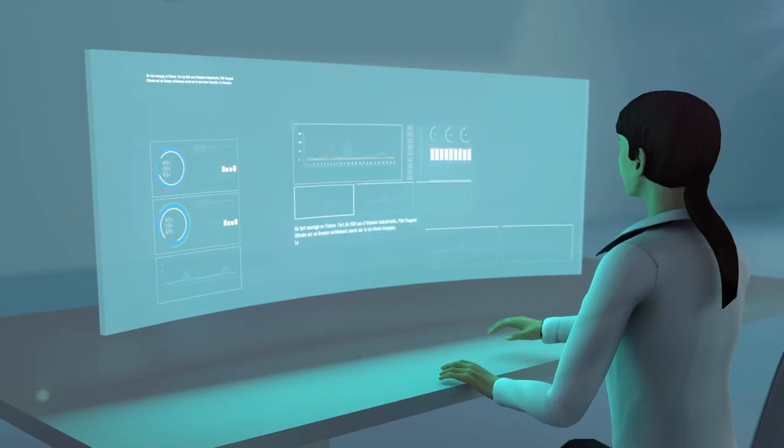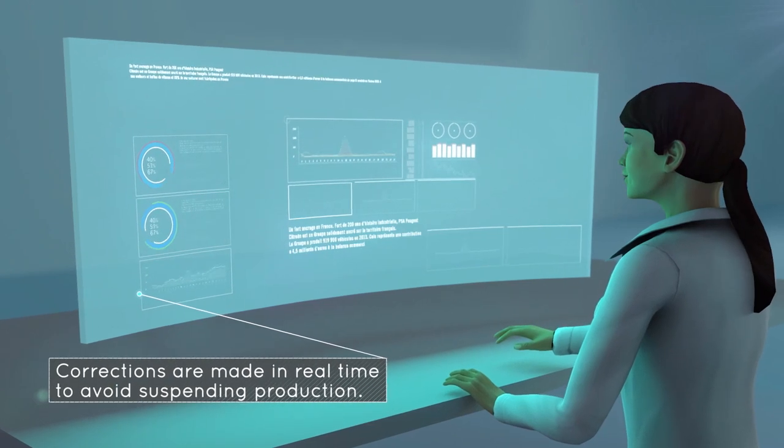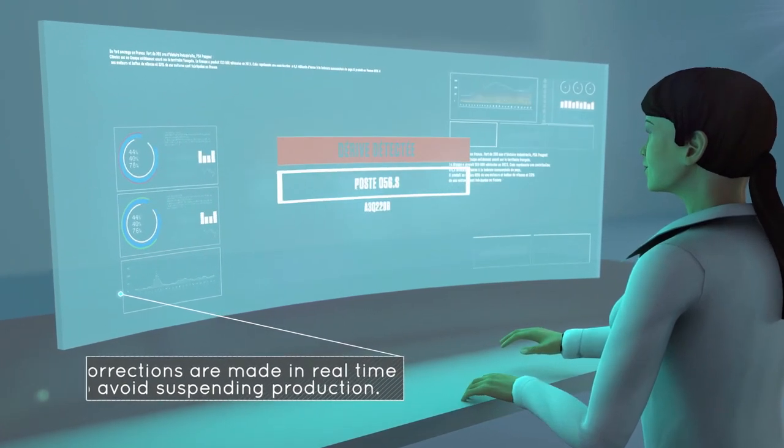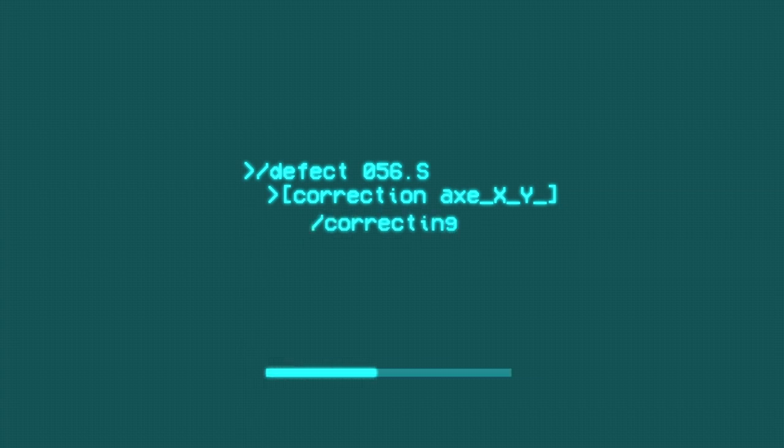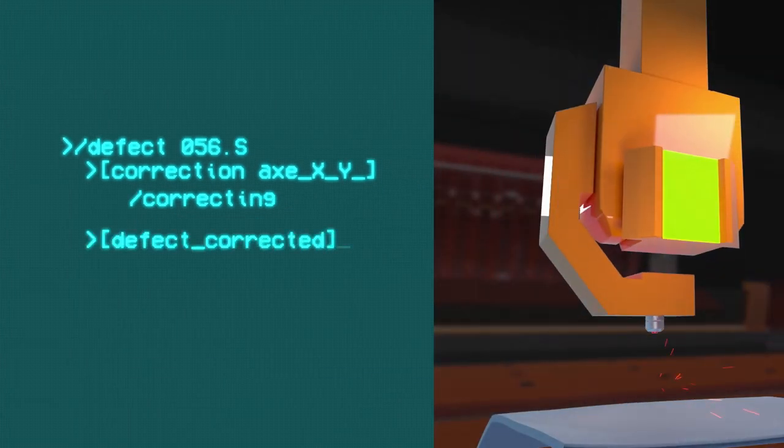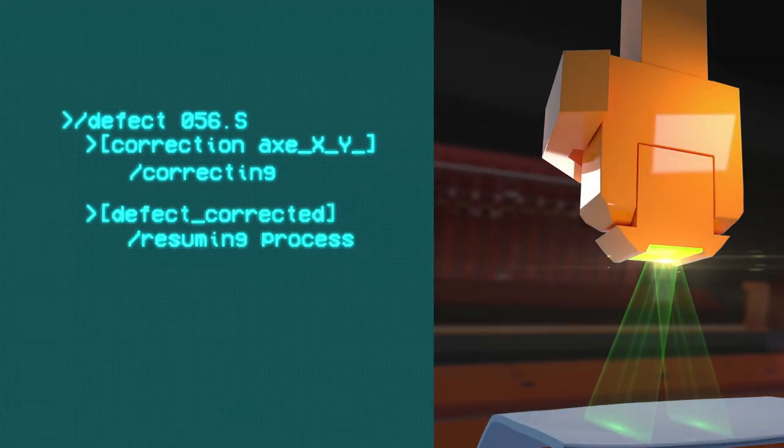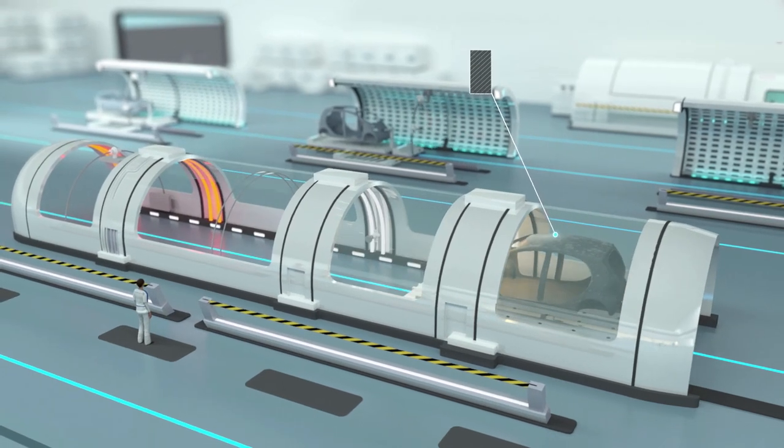The ultra-connected plant of the future is paperless. All information is stored, analyzed and exchanged in real time. If even the slightest defect is detected, corrective information is automatically sent to the robot concerned, whether in the plant or at the supplier's end.